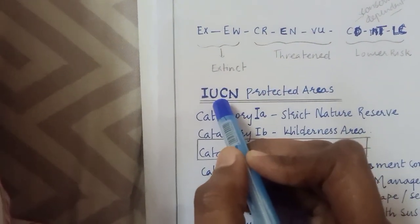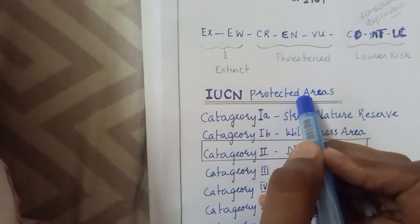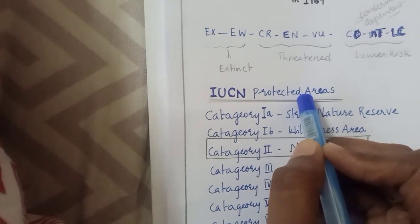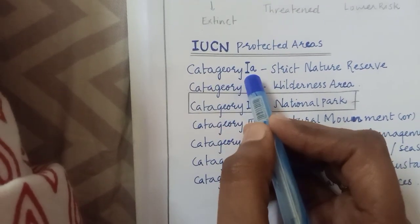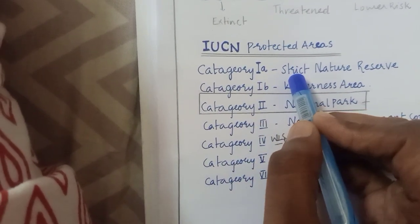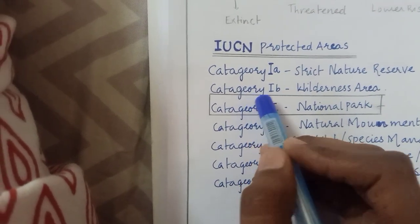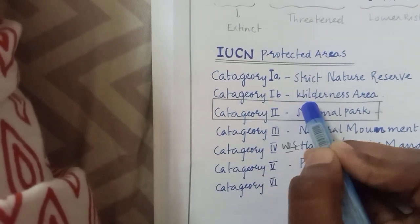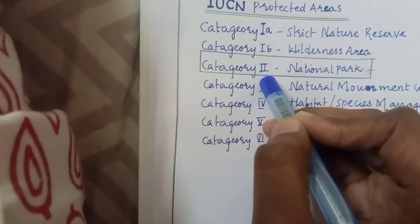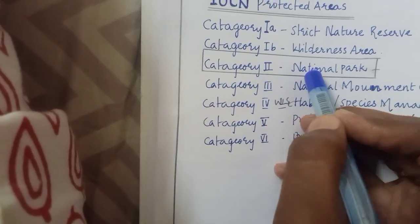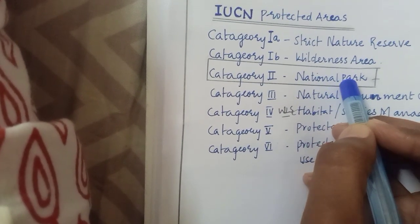According to IUCN, protected areas are divided into different categories. Category 1A includes the strict nature reserve, 1B is wilderness area, and category 2 includes national parks — this is an important thing to remember.